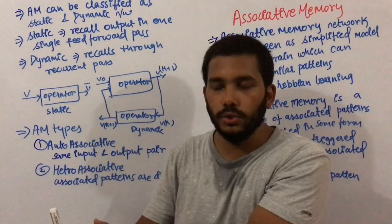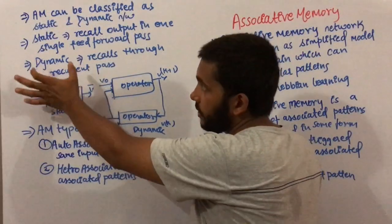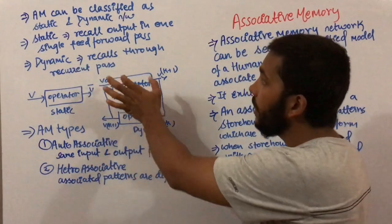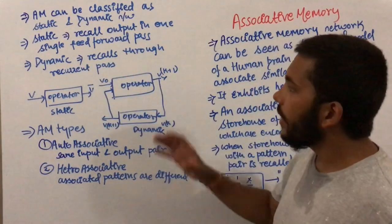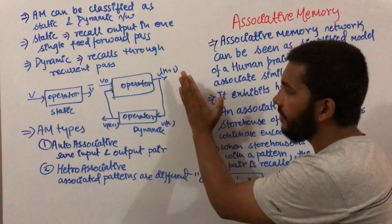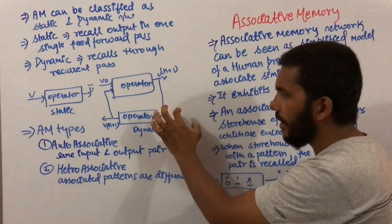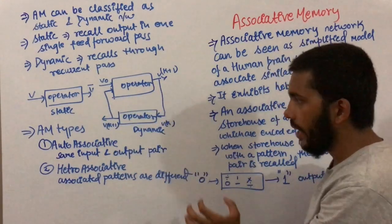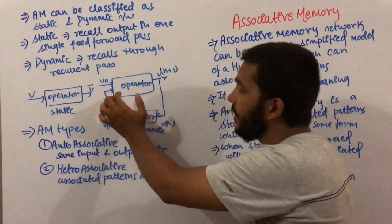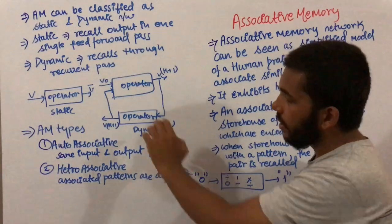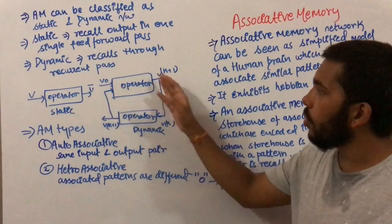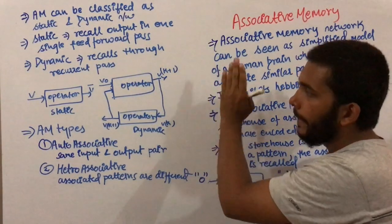Dynamic associative memory recalls through a recurrent pass. You give an input to the operator and it generates an output; this output is given again to the operator as input and again output is generated. This process goes on until you find the perfect match.